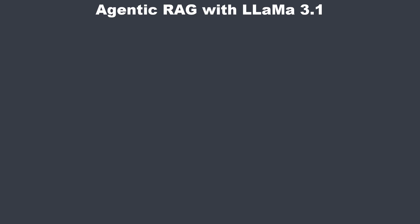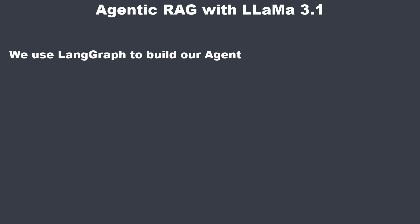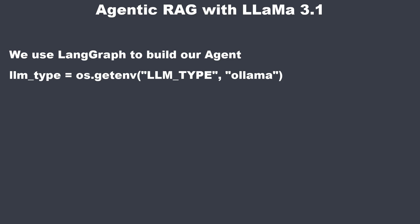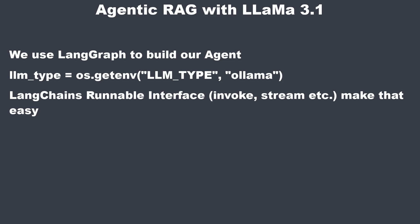Today I will show you how you can perform agentic retrieval augmented generation with Meta's new model Llama 3.1. We will build our agent using LangGraph and also write the code in a way that we can easily switch from Llama to an OpenAI model without changing a single line of code. That's also one of the beauties of LangChain which makes that quite easy.